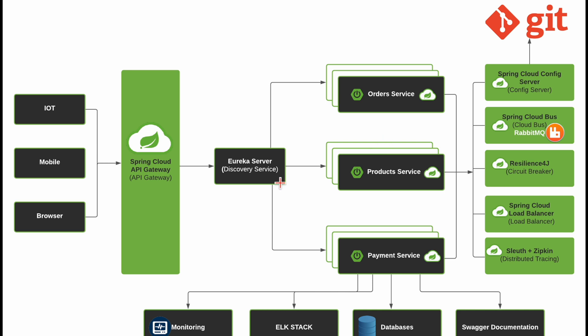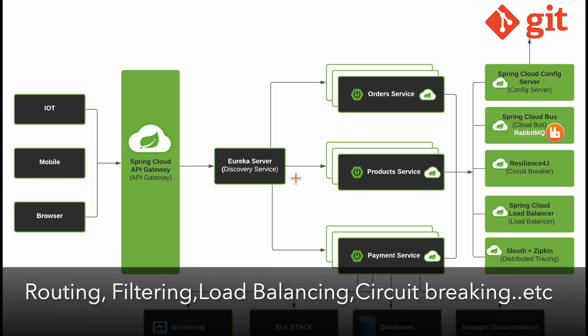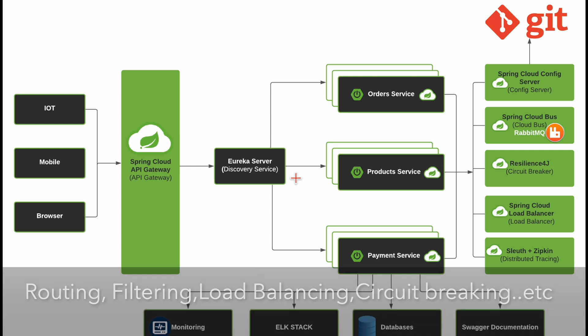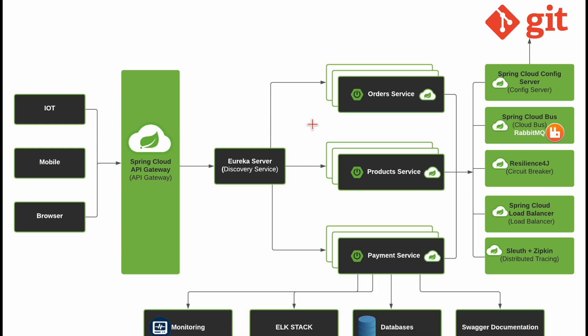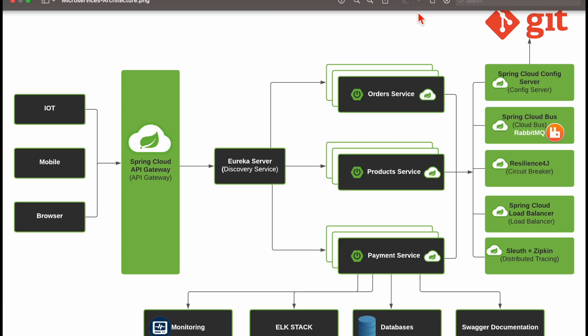We can create a service gateway which routes the request to various microservices and responds to clients. Apart from this, Spring Cloud Gateway provides several features like routing, filtering, load balancing, and circuit breaking as well. That's the overview of API gateway.